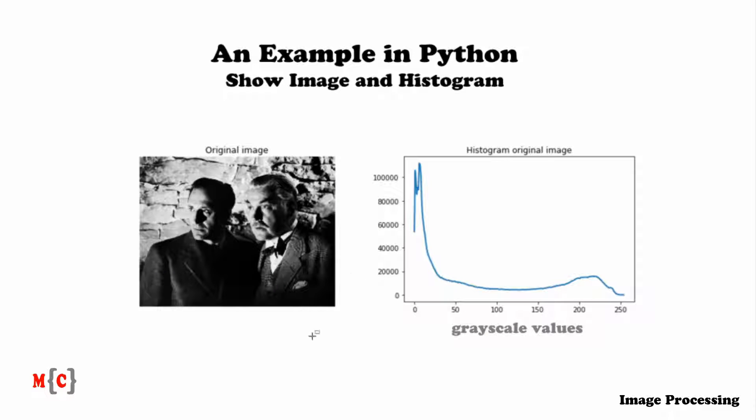So here we have the original image. We see that the image covers the entire grayscale domain. Here we have the number of pixels that correspond to these grayscale values. And there are a lot of dark spots, for example, in the suit or in the hair that cause these peaks. But the most important thing is that it covers the entire grayscale domain.